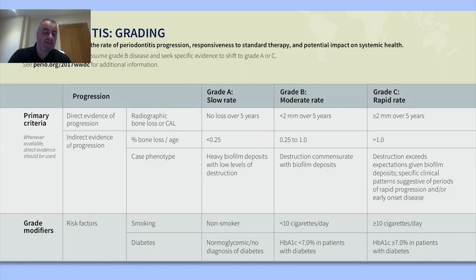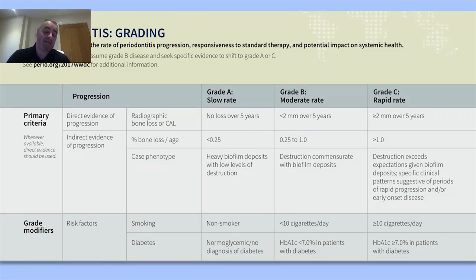The grading table — which assesses rate of progression — also had translation difficulties. To determine how fast disease is progressing using radiographic bone loss, you need historical patient information, which obviously won't be available for new patients. The BSP felt this was challenging to implement in the UK setting. That said, the percentage bone loss to age ratio is a really useful tool, though the BSP adjusted the grade boundaries slightly.